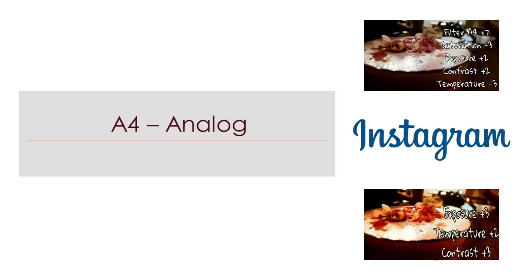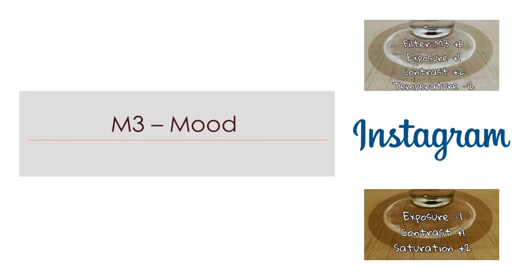First up is the analog filter named A4 in VSCO. This filter turns the color of your photo into a brown-like warm tone, giving it a vintage feel. Next is the mood filter called M3. This filter gives a hint of sepia tone to your photo and creates a nostalgic feel. It gives the illusion of your photos being captured from an old movie camera, and you can always adjust the setting to suit your objectives.